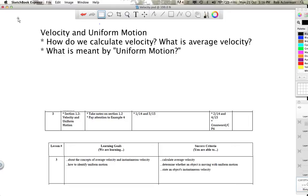Just pause the video for a moment to take a look at where we are in the homework schedule as well as what the learning goals and success criteria are. Now that you're back, here's what we're going to be talking about. How do you calculate this thing called velocity? And furthermore, what is something that's actually called average velocity? If you think back to when we talked about average speed, well this is its cousin, average velocity. And what do we mean by a new term called uniform motion?